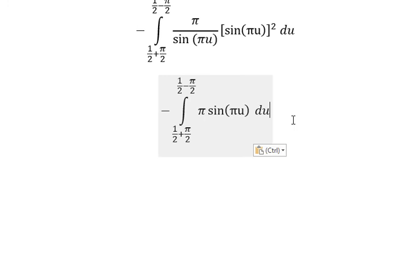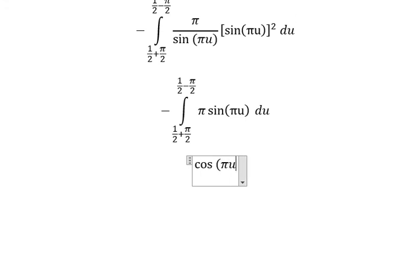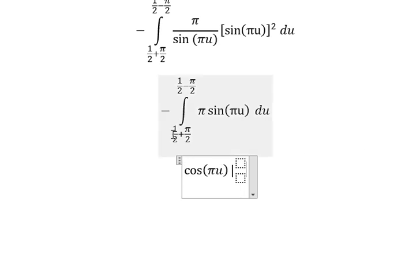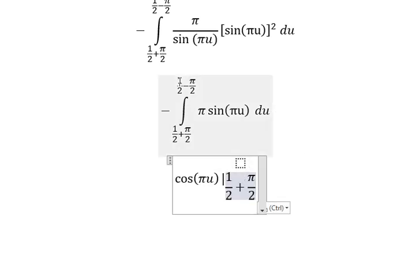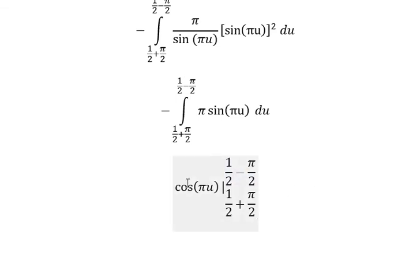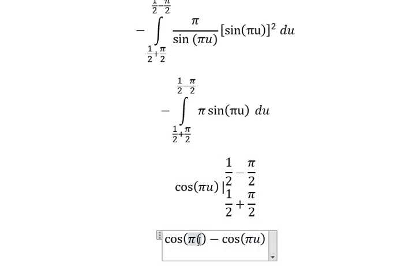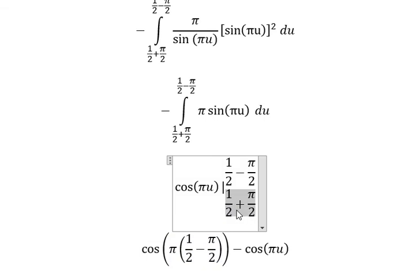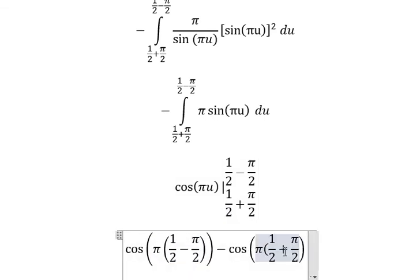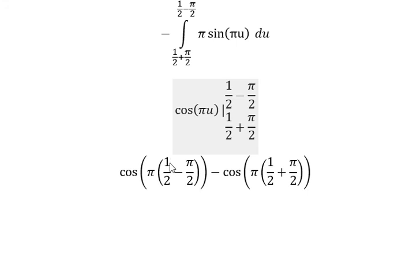Now we have the final answer: the integral of negative sine(bu), and we have another b giving cosine(bu). We have another b and the boundaries from 1 over 2 plus b over 2 to 1 over 2 minus b over 2. Now b multiplied with 1 over 2 and b over 2, and similar for the second one.